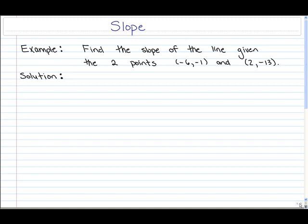Go ahead and pause the video and try this example on your own. Just find the slope of the line given the two points there. Remember that it's the ratio of the rise over the run, which is the vertical change to the corresponding horizontal change.